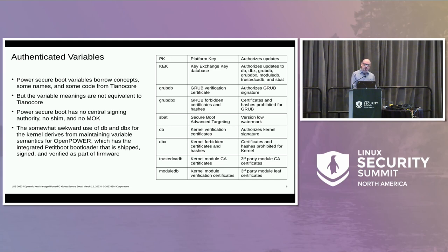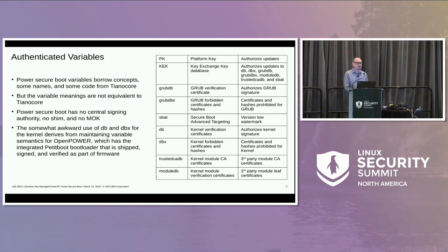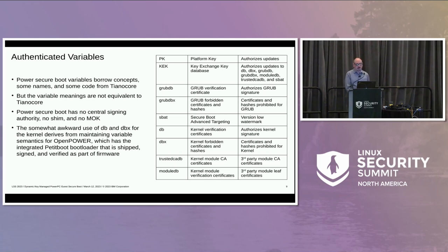We have a KEK, akin to UEFI. The grubdb and grubdbx are used to verify grub. We are using SBAT, which turns out to be a really important concept. Much like on x86-64 systems, we have limited storage — even for this, we'll be expanding the PKS platform key store storage in the future. But right now we're fairly constrained. SBAT is nice because you can block a whole set of things from the past based on a generation number. The trusted cadb and module db are used to verify third-party signed modules, which is really important — if you're trying to boot a machine and need to get to the disk, you need to do that securely, and not all drivers are shipped in the distro or part of the kernel.